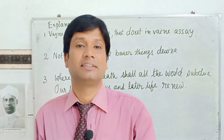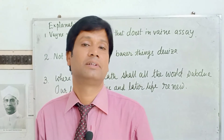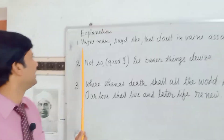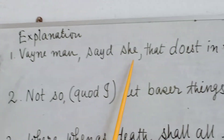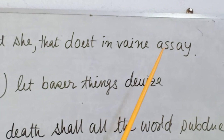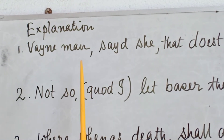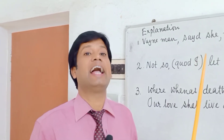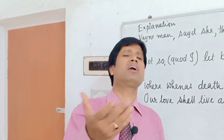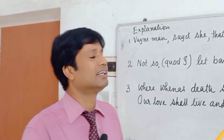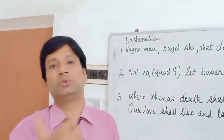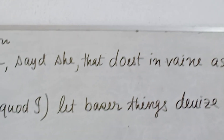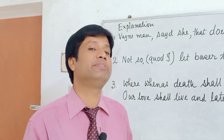These are questions of 15 marks. The first explanation: 'Vain man,' said she, 'that dost in vain essay.' Here, the beloved is speaking to the poet-lover, saying that you are a proud man and you are trying to immortalize a mortal thing — this attempt is very futile. In such a way, you should write this explanation, as I have already focused on in my previous video.